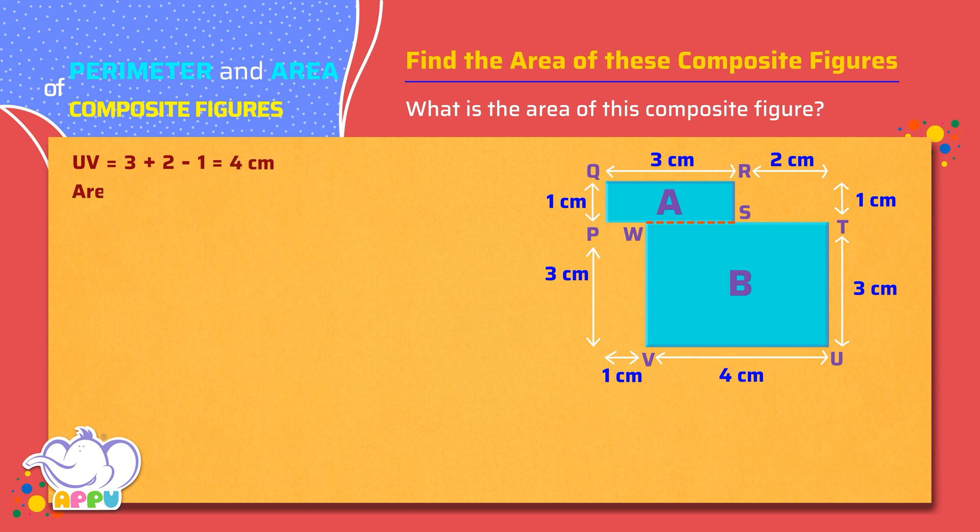Area of Rectangle A equals Length times Width equals QR times RS equals 3 centimeters times 1 centimeter equals 3 square centimeters.